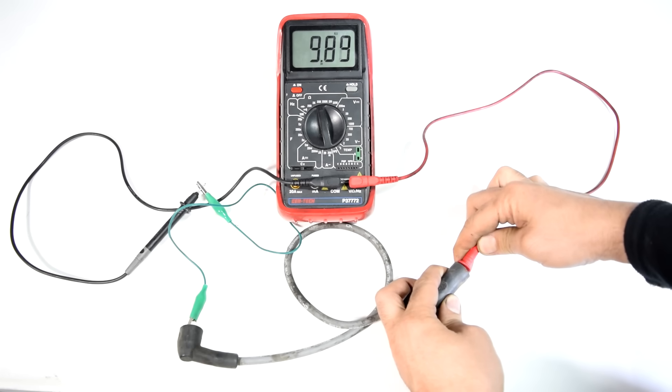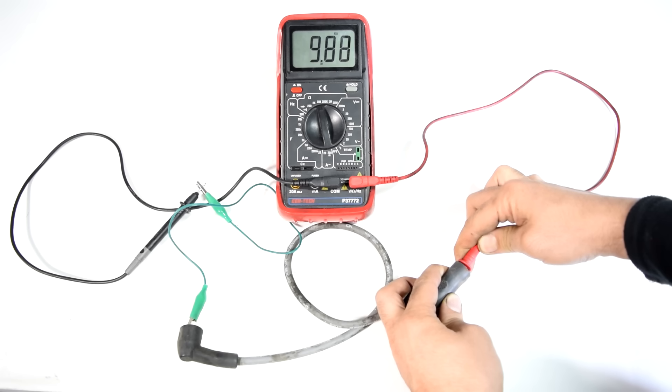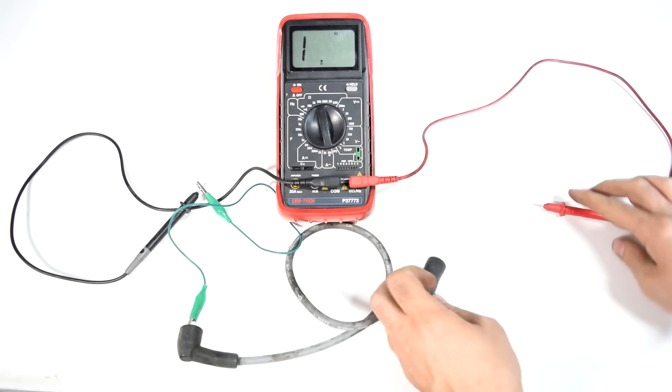All right here we go and as you can see we got 9.88, 9.89 thousand ohms of resistance or in other words 9,860 or 9,870 ohms of resistance for the spark plug wire which is about spec.